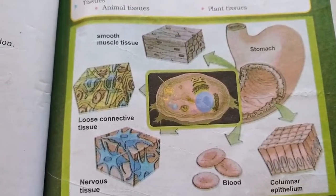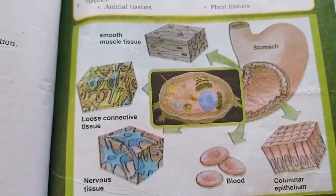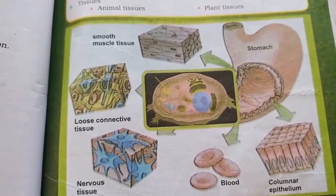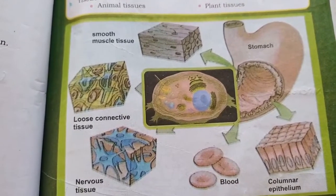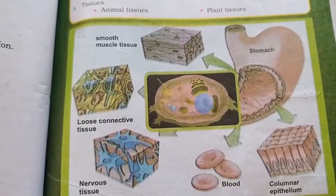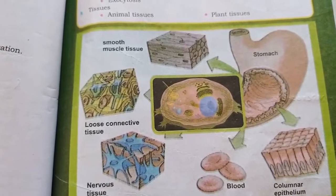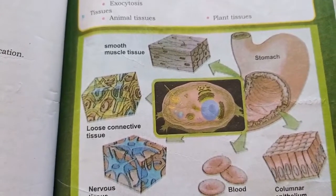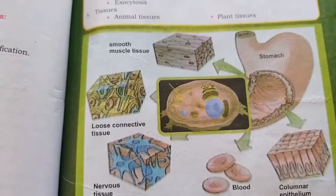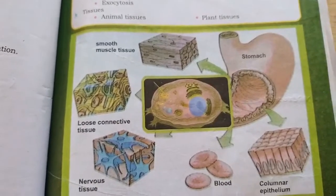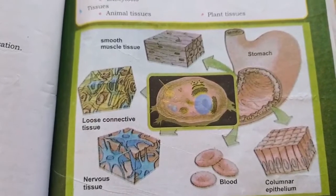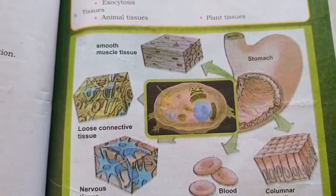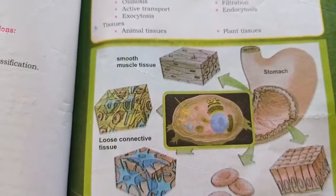If you look at any organism, they are all made up of tissue — whether plant or animal. What is the meaning of tissue? When similar cells combine together and perform the same functions, they are called tissue. But before studying cell and tissue in detail, we should know what a microscope is.